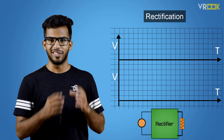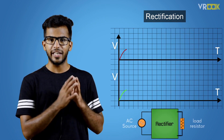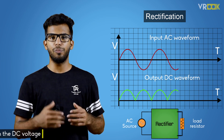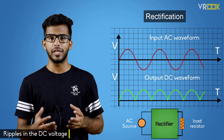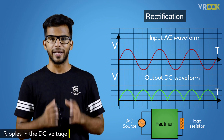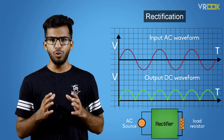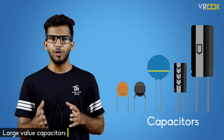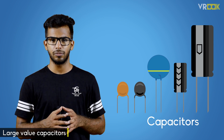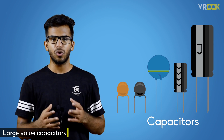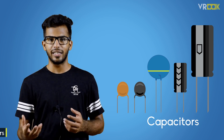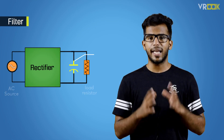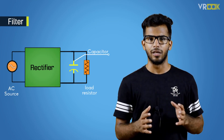Rectification is used to get a direct voltage from an alternating source, but there will be ripples in the DC voltage produced by rectifiers. The amount of ripple can be further reduced by using a large value capacitor, but there are limits on both the cost and size of smoothing capacitors used.